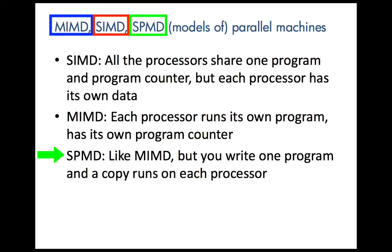SPMD stands for Single Program Multiple Data. It's really a form of MIMD. In SPMD, one writes a single program, and then every processor runs its own copy of that program. But from the beginning, they're allowed to take independent branches and go in different ways, depending on different data that they may have. One of the data they have is their processor number, so you can branch based on your processor ID.